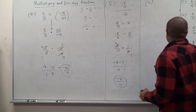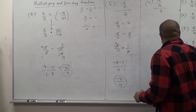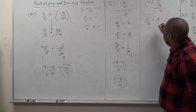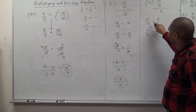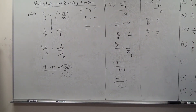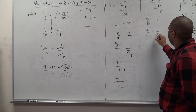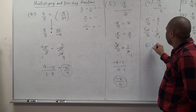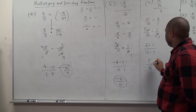Another example: 15 over 16 divided by 3. This means 15 over 16 divided by 3 over 1, which is 15 over 16 times 1 over 3. Convert division to multiplication and find the reciprocal. Simplify and multiply: 3 divides 3 is 1, 3 divides 15 is 5. So this is 5 times 1 over 16 times 1, giving 5 over 16.